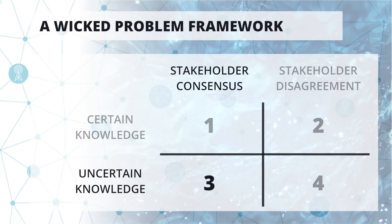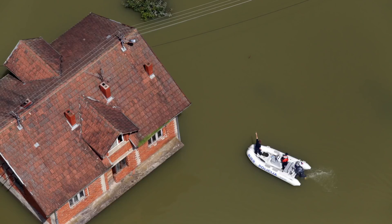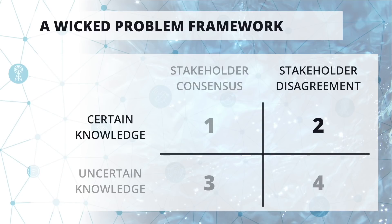In the third quadrant, we still don't know what is going on, but we have agreed that we want to act — so in that quadrant we often see humanitarian organizations springing into action after a disaster. In the second quadrant, we know much more. This is an example of a flood situation, but because there was disagreement on where or where not to build a house, people are living in flood zones and are then in danger when a flood happens. This is really a governance problem.